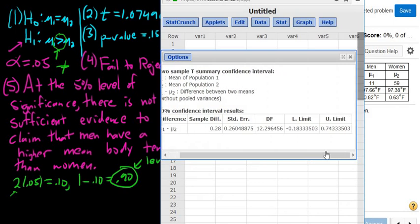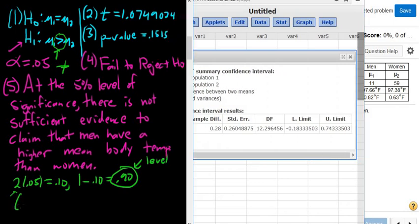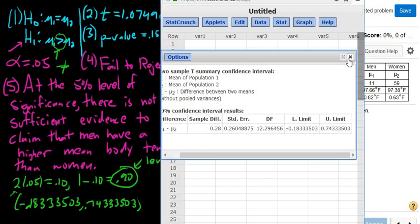And there is our confidence interval. Now, I don't know how many decimals it's going to want. Usually it's 3, but I'll write down a couple. So negative 0.1833503. 0.743333503. They both end in that 503. Kind of cool.